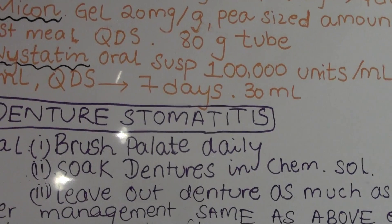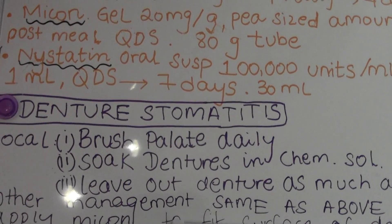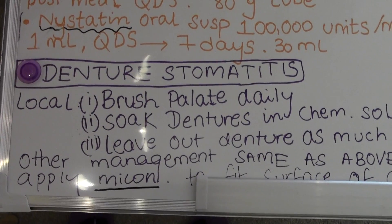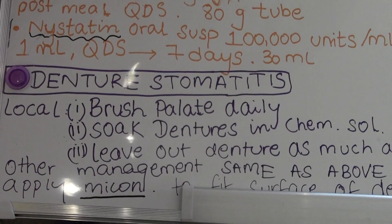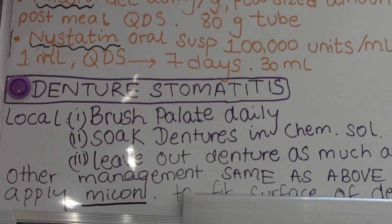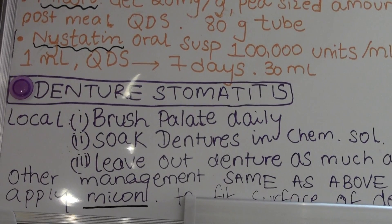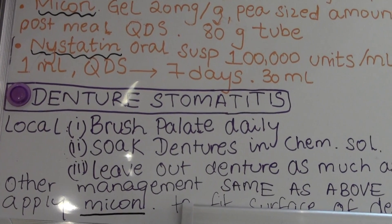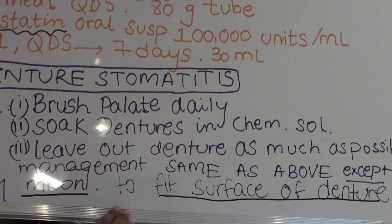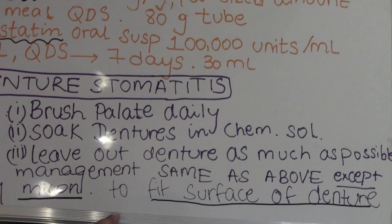Coming to denture stomatitis — the treatment is very similar to pseudomembranous and erythematous candidosis. The difference is that if we're giving miconazole, because this is in denture patients, we're going to ask the patient to put the miconazole gel on the fitting surface of the denture. The rest is the same. Local measures include asking the patient to brush their palate daily.